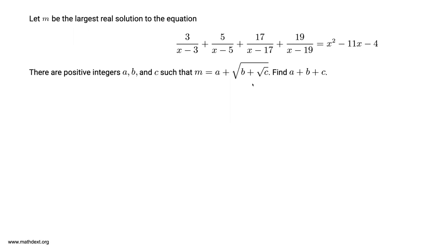Let m be the largest real solution to the equation 3/(x-3) + 5/(x-5) + 17/(x-17) + 19/(x-19) = x² - 11x - 4. There are positive integers a, b, and c such that m equals a plus root b plus root c. Find a + b + c.